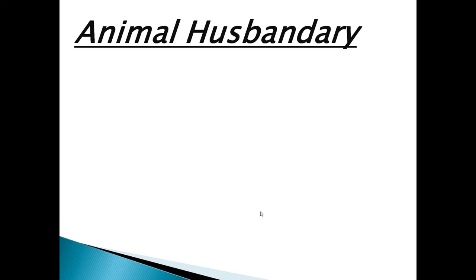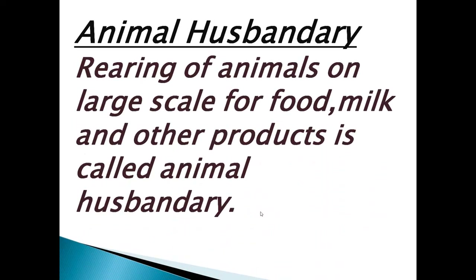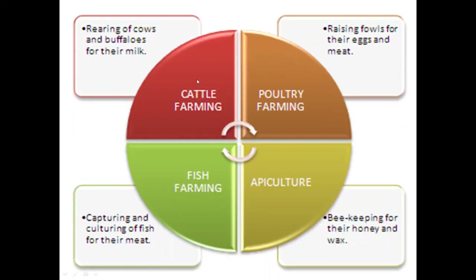Agriculture is not only about growing crops — it also includes the rearing of animals. Rearing of animals on a large scale for food, milk and other products is called animal husbandry. Animal husbandry is divided into four important categories: cattle farming, poultry farming, apiculture, and fish farming.